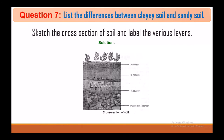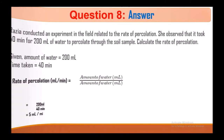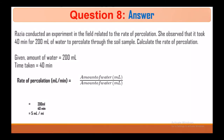Question 7: Sketch a cross-section of the soil and label the various layers. The cross-section shows four layers: A horizon, B horizon, C horizon, and parent rock, also known as bedrock.